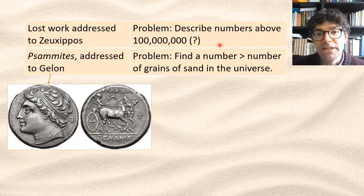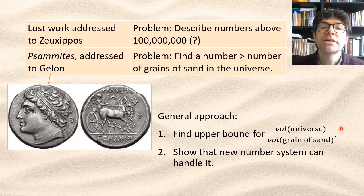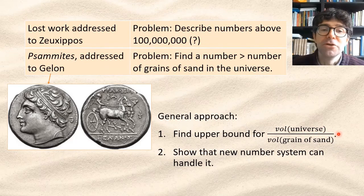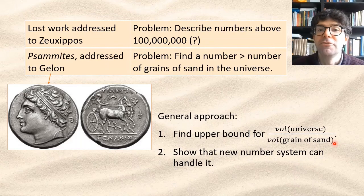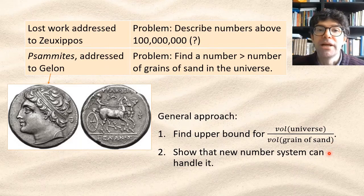Broadly what Archimedes does is come up with a loose upper bound for the number of grains of sand needed to fill the entire universe by dividing a high estimate of the volume of the universe by a small estimate of the volume of one grain of sand. And then he shows that his number system can easily handle such a big number.